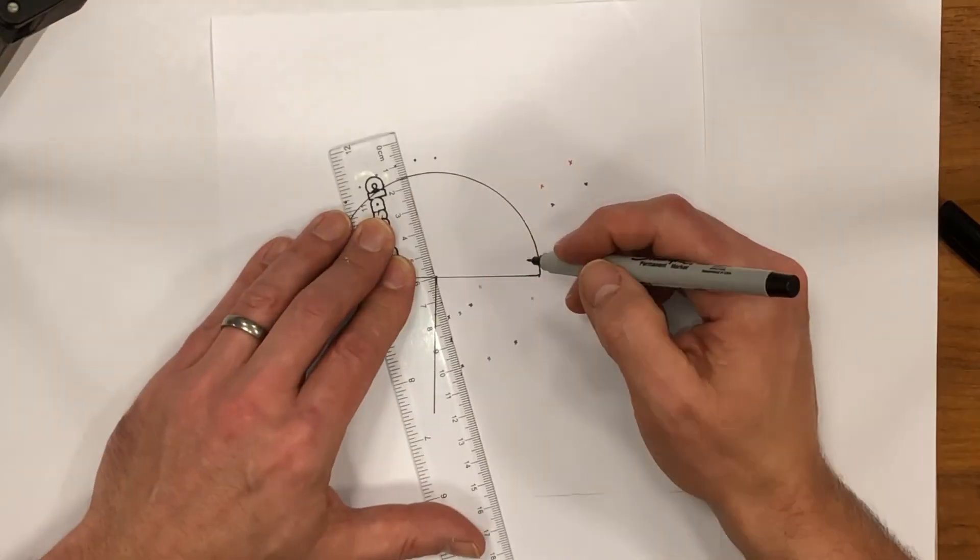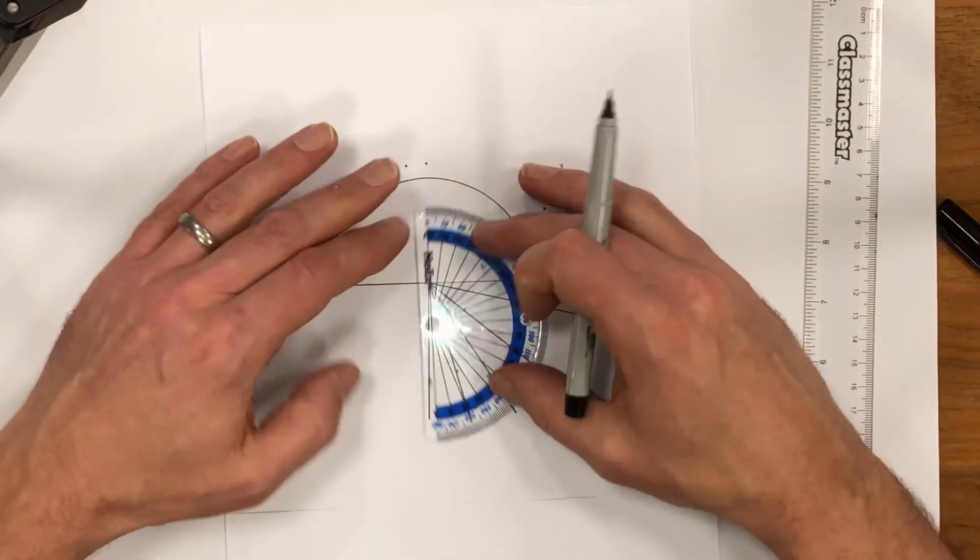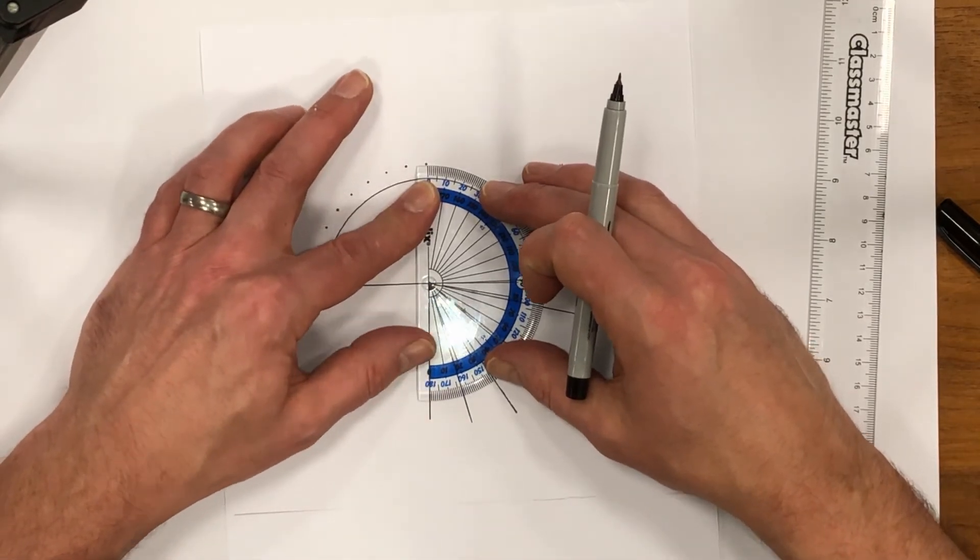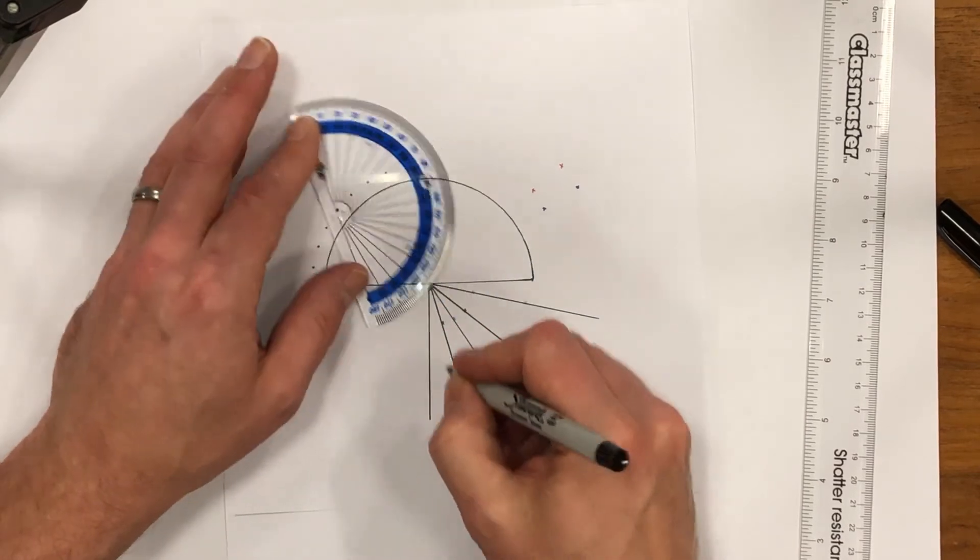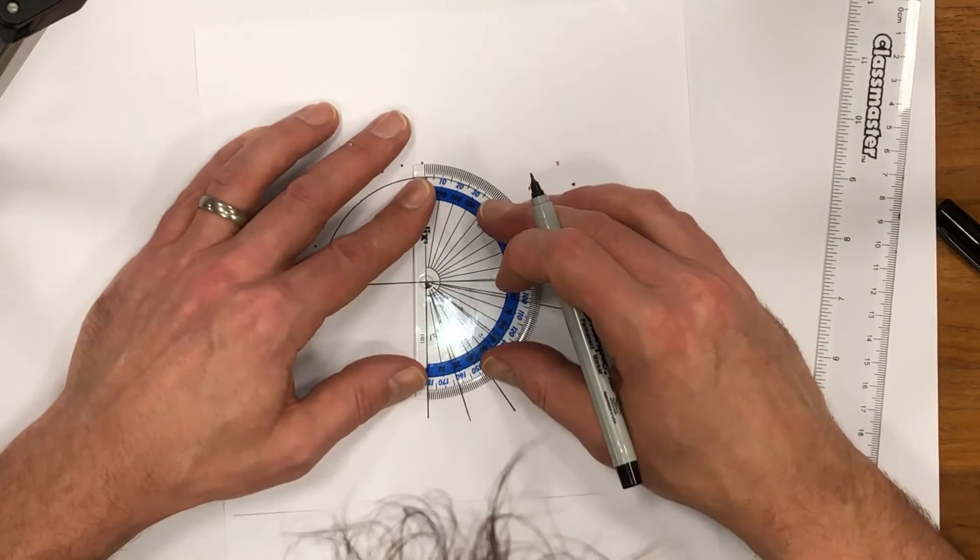Then I take my ruler and join all the dots together to show the routes the rays have taken, and measure the angles with the protractor, being careful to measure from the normal to the rays.